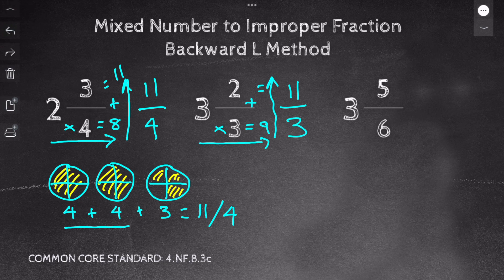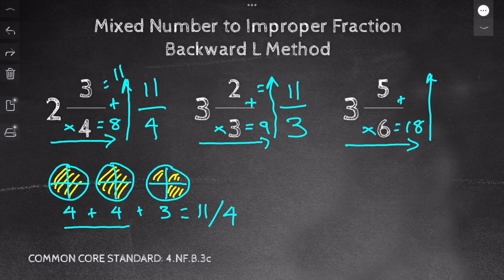And for my next problem, I have 3 and 5/6. So I multiply 3 times 6, which equals 18. And then 18 plus 5 equals 23. So I have 23/6.